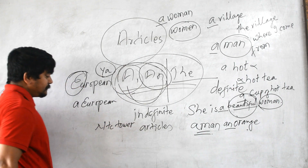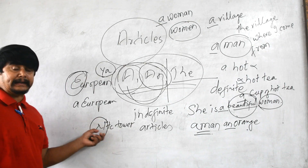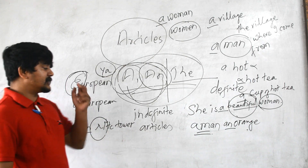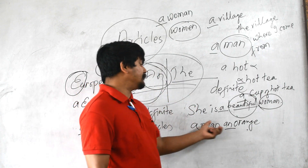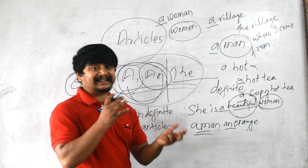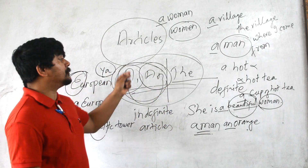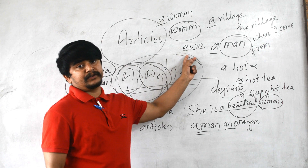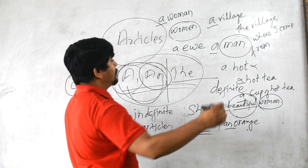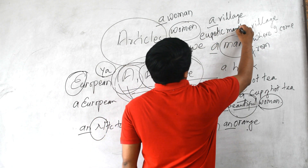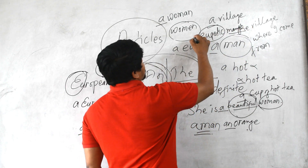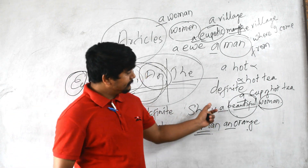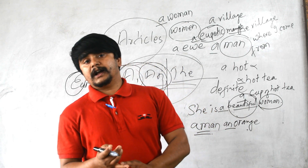Similarly, 'NTC Tower' — N is a consonant letter, but the sound it produces is a vowel sound, so we write 'an NTC Tower.' Another example: 'ewe' — this is not pronounced as 'e,' we pronounce it as 'u,' so we say 'a ewe.' Likewise, 'a eupeptic mango' — the 'y' sound comes here, so we use a. In summary: before vowel sounds use an, before consonant sounds use a.